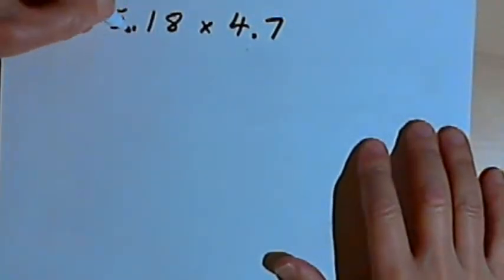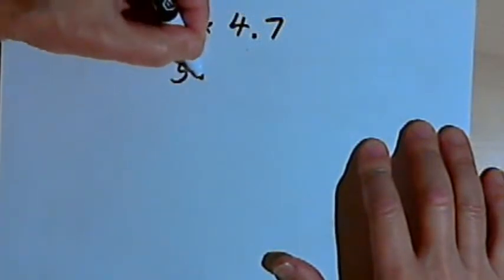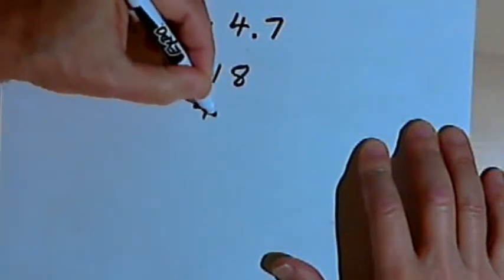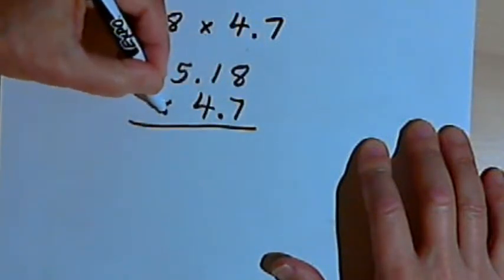So here's the problem we're dealing with. I've got 5.18 times 4.7. I'm going to write this as a multiplication problem with one number above the other. I'm going to put the decimal points in, but I'm not going to worry about them for the moment.